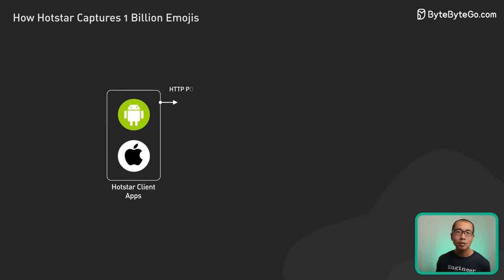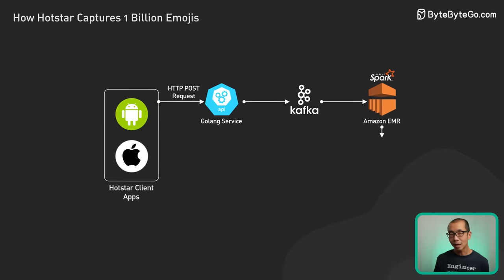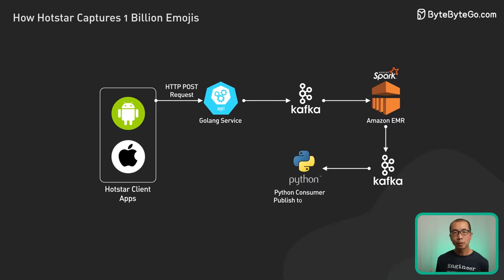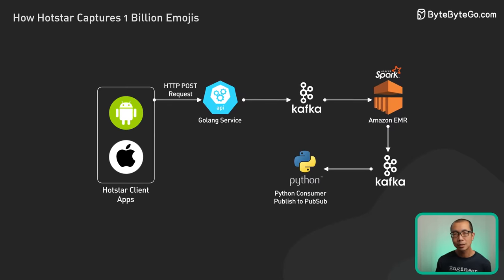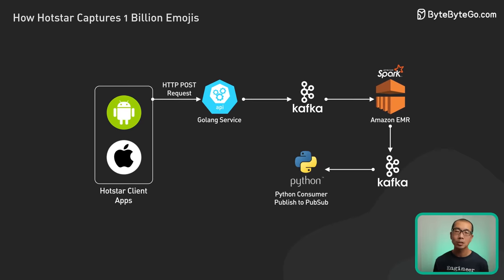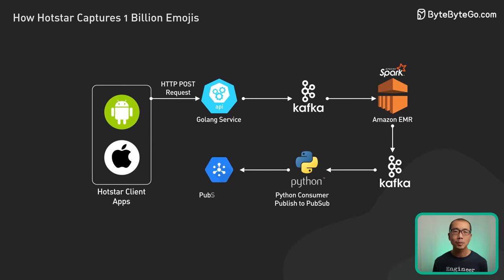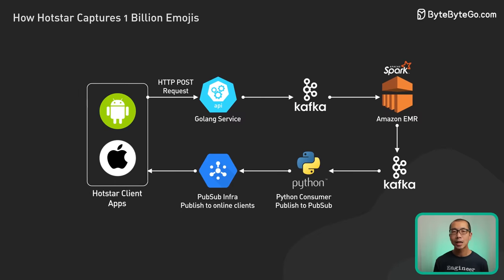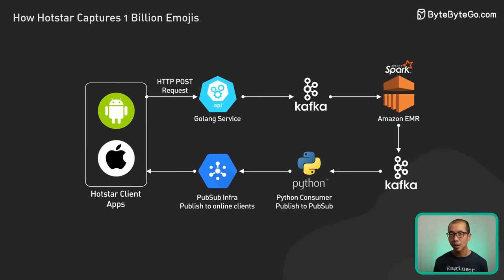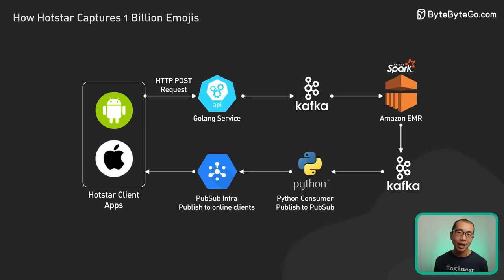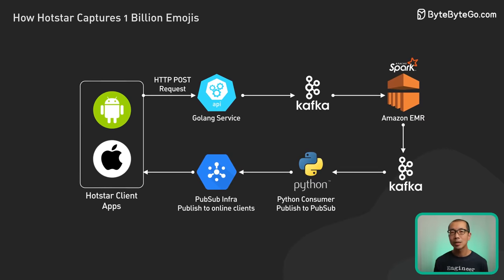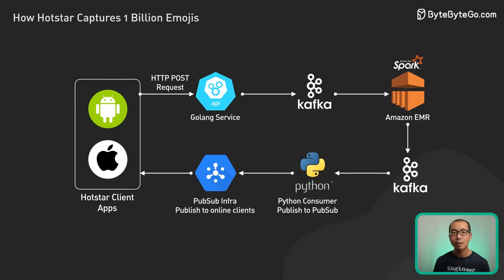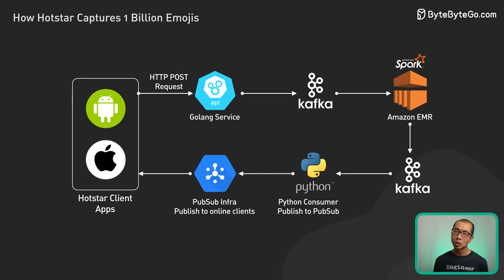The aggregated sentiment data is routed into a separate Kafka topic that buffers it before final delivery. A Python consumer pulls from this Kafka topic and publishes the sentiment data through Hotstar's custom-built PubSub messaging system, which is the final piece of the whole setup. Built on MQTT, it's designed to handle large amounts of content while keeping delays low, quickly sending sentiment data to millions of devices and ensuring the audience gets real-time updates without any hiccups.